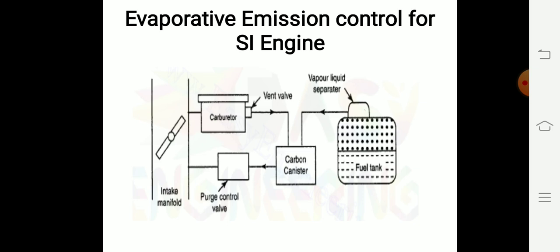Once the engine is running and needs more air fuel mixture, that means rich air fuel mixture, the vapor in the carbon canister goes to the inlet manifold. Due to this, complete combustion is occurred. By this method, hydrocarbon emission is controlled.